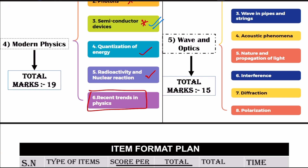Recent trends in physics: seismology, earthquakes, different types of surface waves — Rayleigh waves, Love waves, S and P waves. Gravitational waves, nanotechnology, and the Higgs boson. These are new findings important in daily life. This concludes Modern Physics.